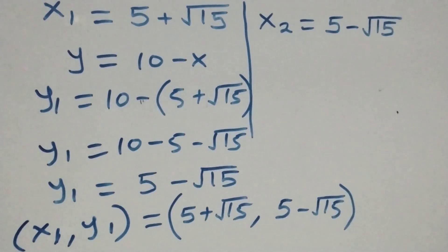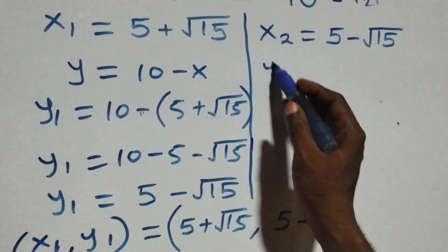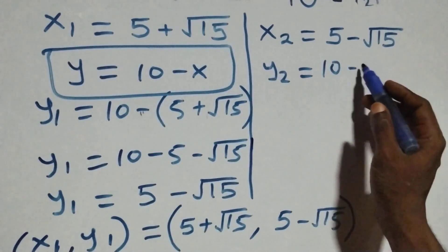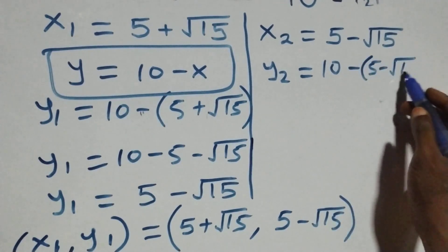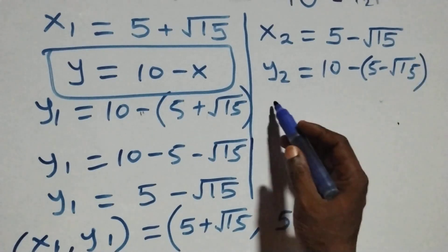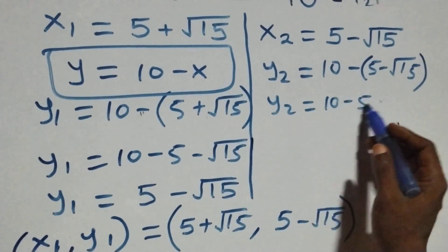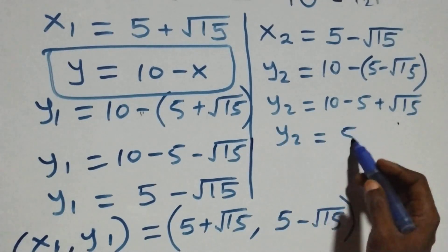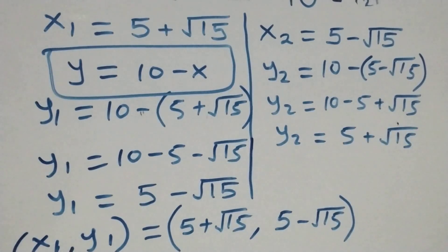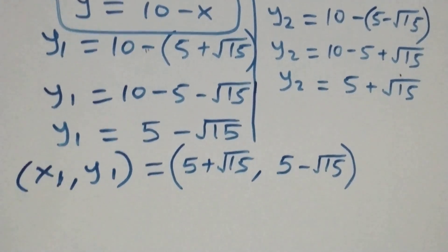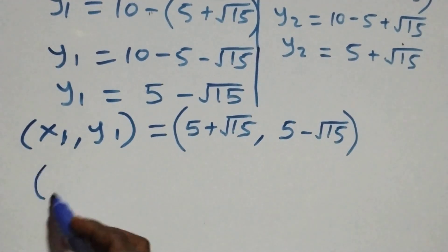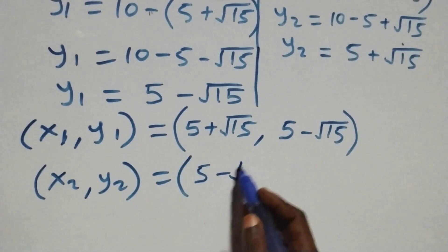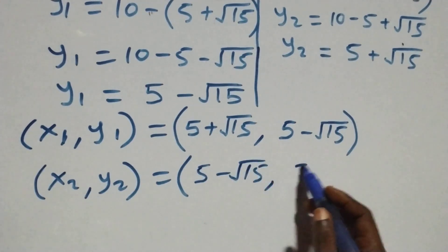For the second solution, y₂ equals ten minus x₂, which is ten minus bracket five minus root fifteen. Opening the bracket gives y₂ equals ten minus five plus root fifteen, so y₂ equals five plus root fifteen. Therefore the second solution set is x₂ comma y₂ equals five minus root fifteen, comma, five plus root fifteen.